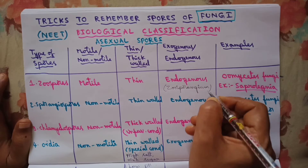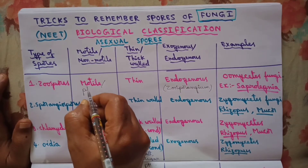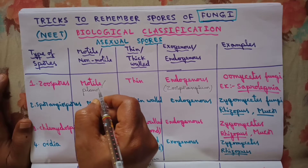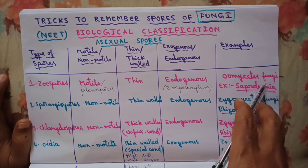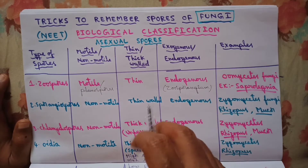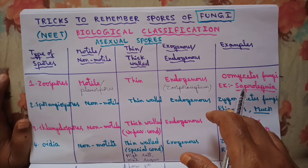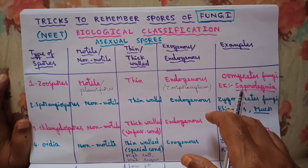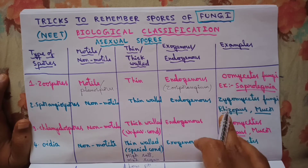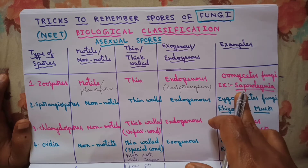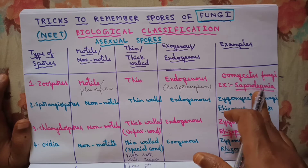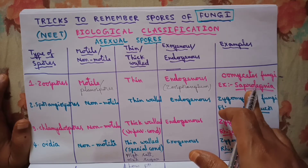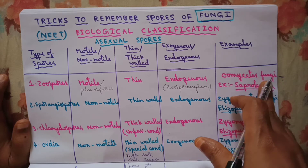These motile spores are also called planospores — the other name for motile spores is planospores. These zoospores are formed by oomycetes fungi. We have four classes of fungi: phycomycetes, ascomycetes, basidiomycetes, and deuteromycetes. Phycomycetes includes two subclasses: oomycetes and zygomycetes. Oomycetes fungi produce zoospores. An example is Saprolegnia, a fungus belonging to the subclass oomycetes under the class phycomycetes.